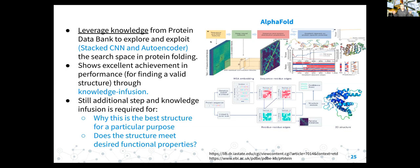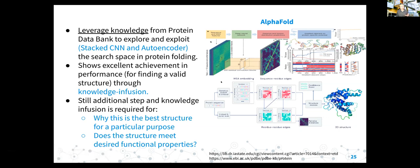A next step beyond AlphaGo can be found in AlphaFold, another major success story. In that case, taking information from the Protein Data Bank - leveraging noise from protein data bank - enables the system to perform very well. But still additional steps for knowledge infusion are required: why is this the best structure for a particular purpose? This structure follows physics and chemistry, but why is it a functionally good result? For example, in drug discovery, a valid drug molecule is the first step, but then you need to assess whether that candidate has the right solubility or toxicity profile.